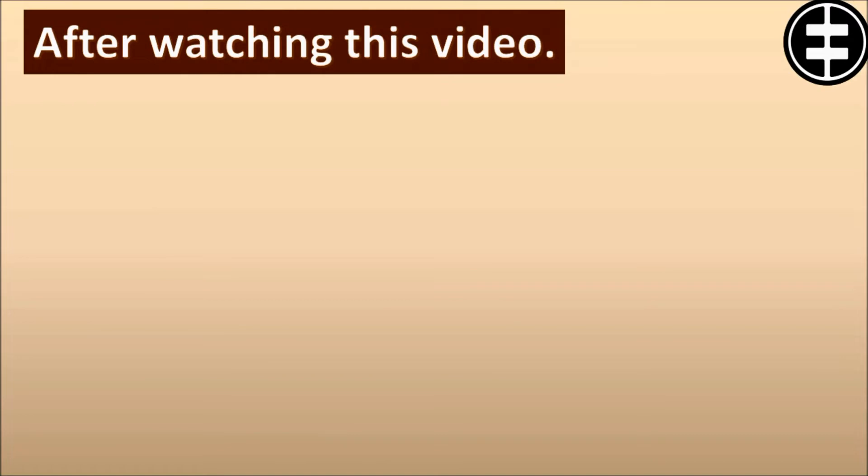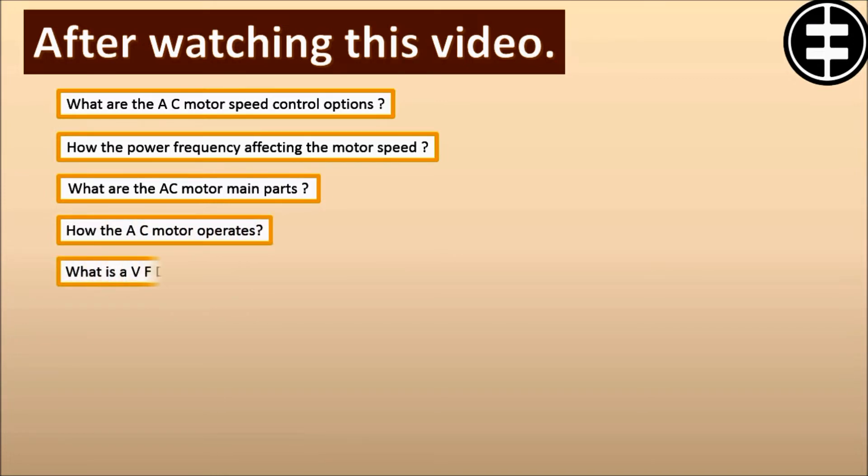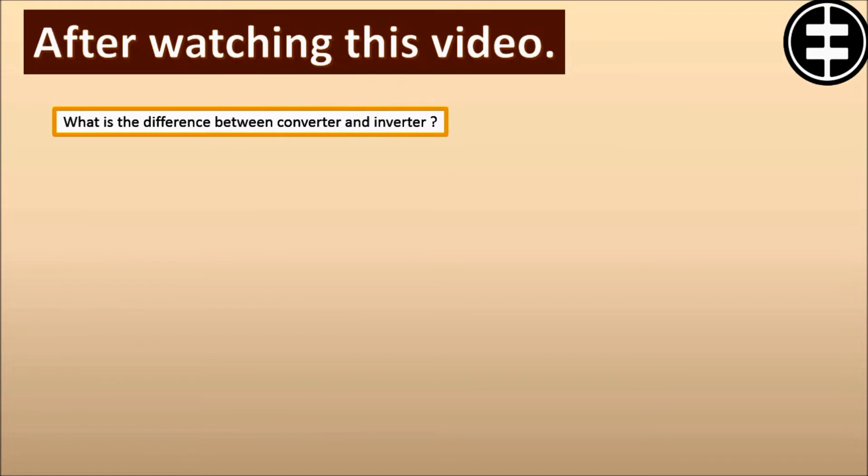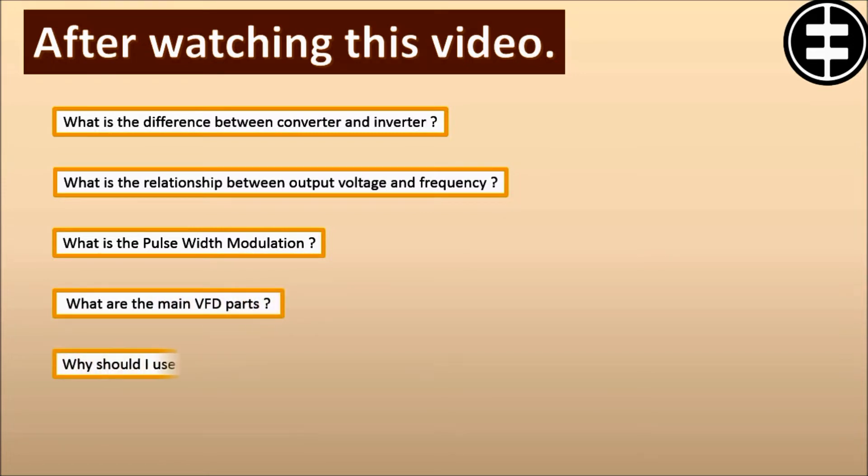After watching this video, you will be able to answer these questions. What are the AC motor speed control options? How does the power frequency affect the motor speed? What are the AC motor main parts? How does the AC motor operate? What is a VFD? How does a variable frequency drive work? What is the DC bus voltage level? What is the AC ripple on the DC bus? What is the difference between converter and inverter? What is the relationship between output voltage and frequency? What is pulse width modulation? What are the main VFD parts? Why should I use a VFD?